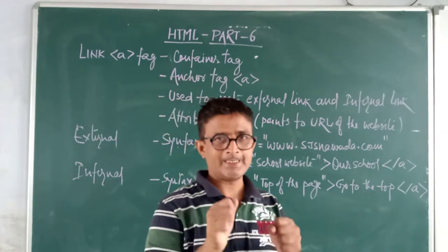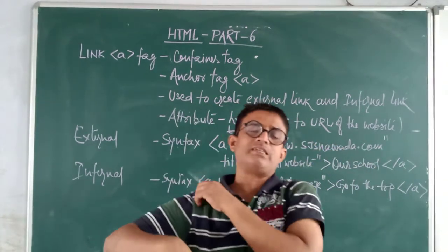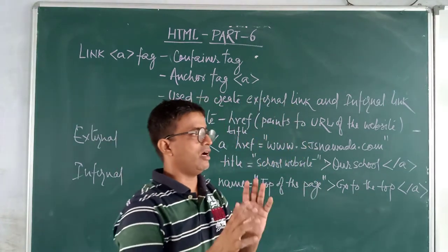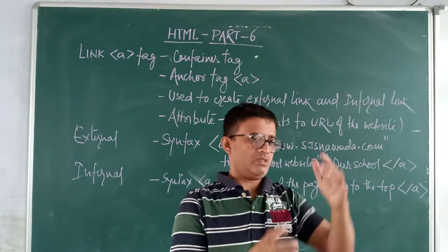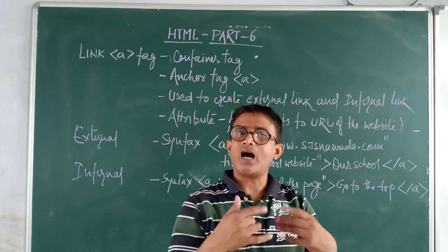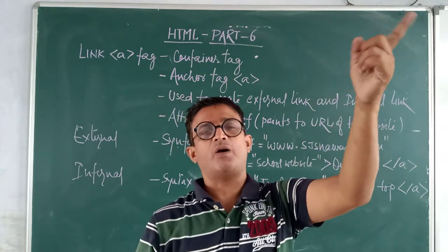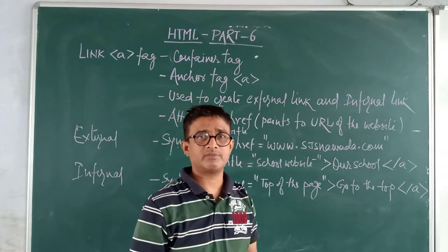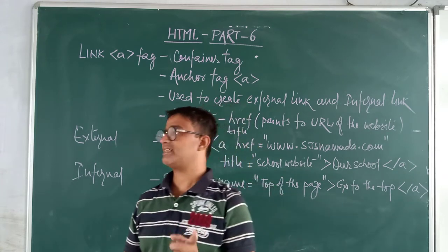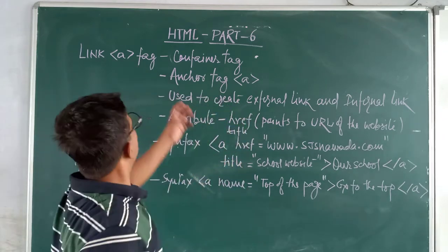Welcome to the sixth part of HTML. Here we will discuss how we can link one page to another page, or how we can link within a page — for example, moving down a page and wanting to go at once to the top. HTML has one tag known as the anchor tag, written as 'a' inside angle brackets, also known as the link tag.